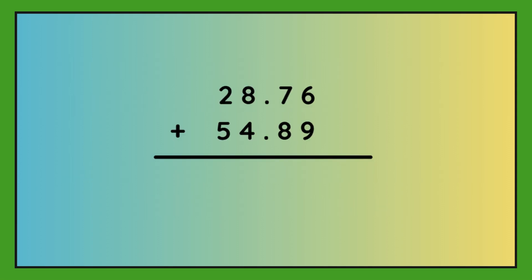So here is our first sum, 28.76 plus 54.89. So what we need to do is line up our decimal points and we need to remember to put the decimal point in the answer as well.